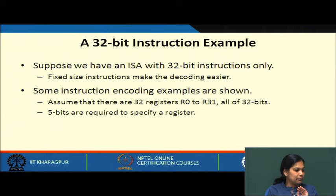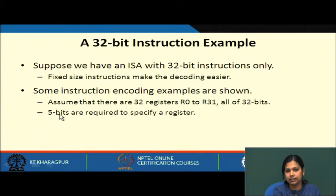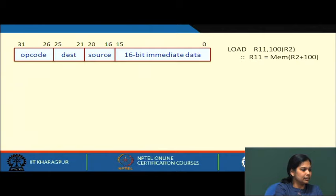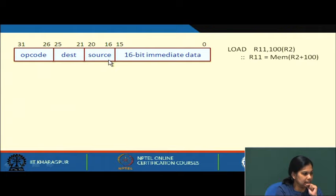Some instruction encoding examples: assume there are 32 registers — 5 bits are required to specify a register. If there are 64 registers, 6 bits are required. Consider a format where bits 26–31 give 6 bits for the opcode, then 5 bits each for registers, and 16 bits for immediate data.